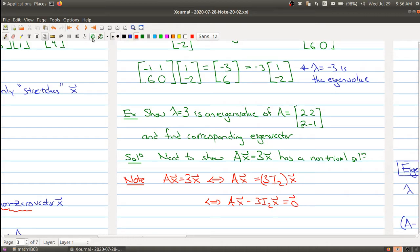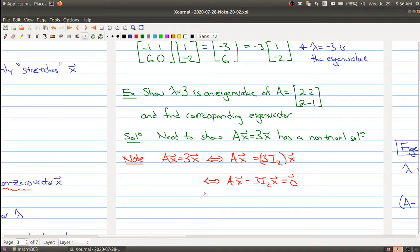The advantage of now writing both of these terms here as matrices is that I can now factor out the x the vector x and end up with (A - 3I₂)x equals to zero.